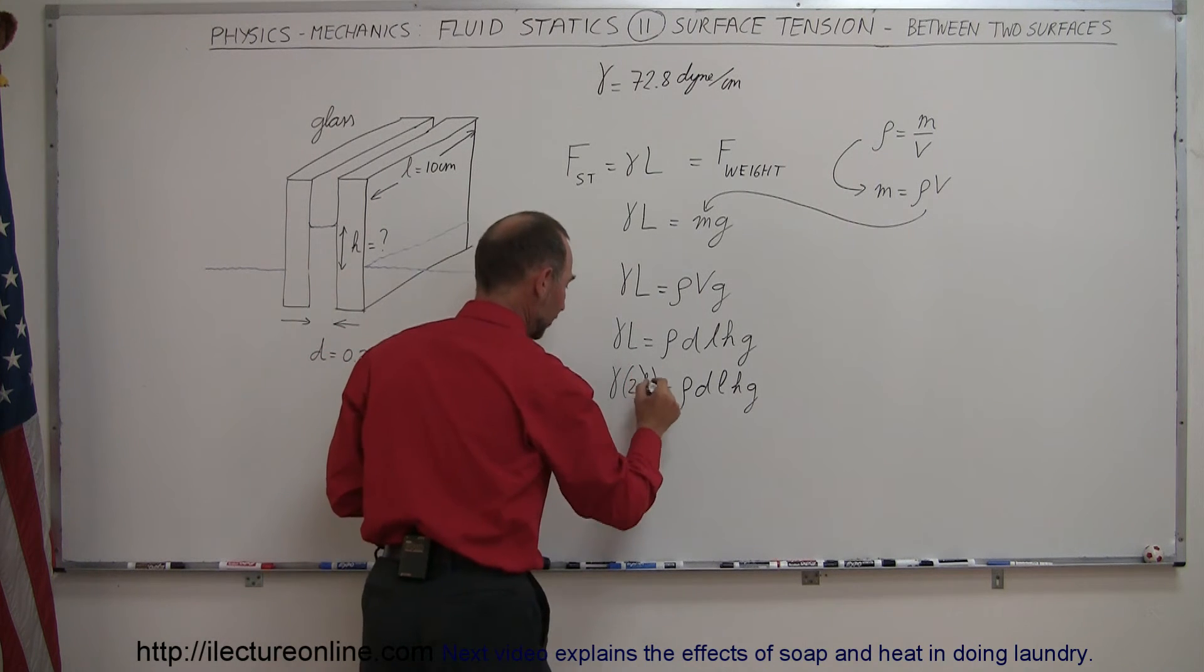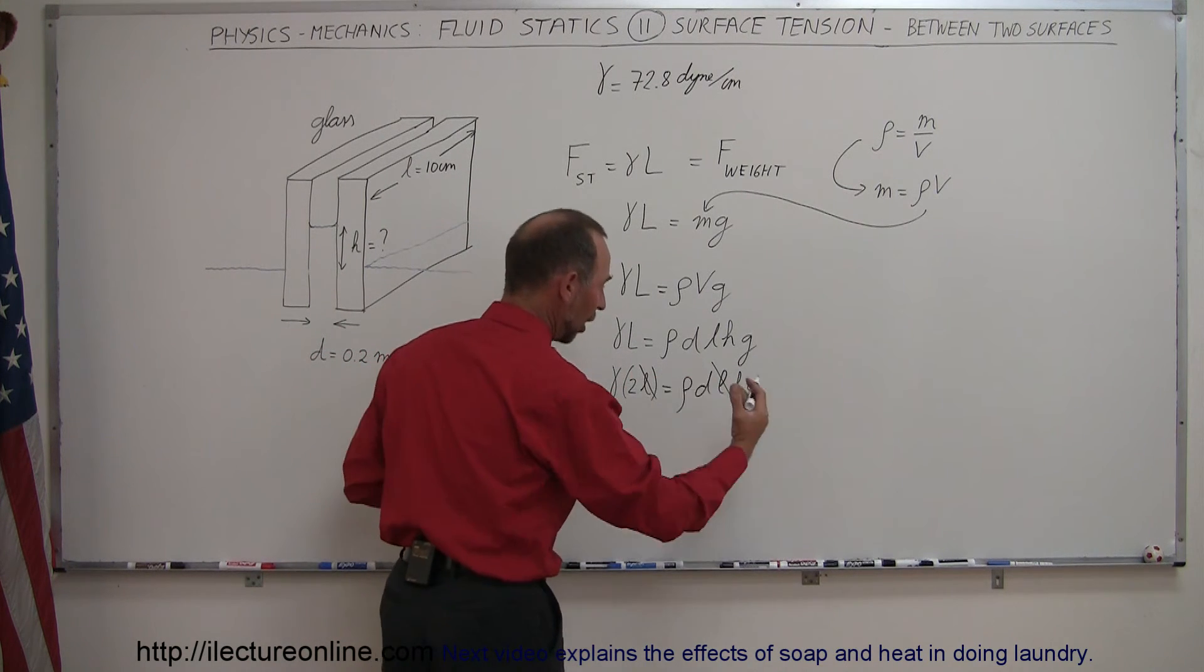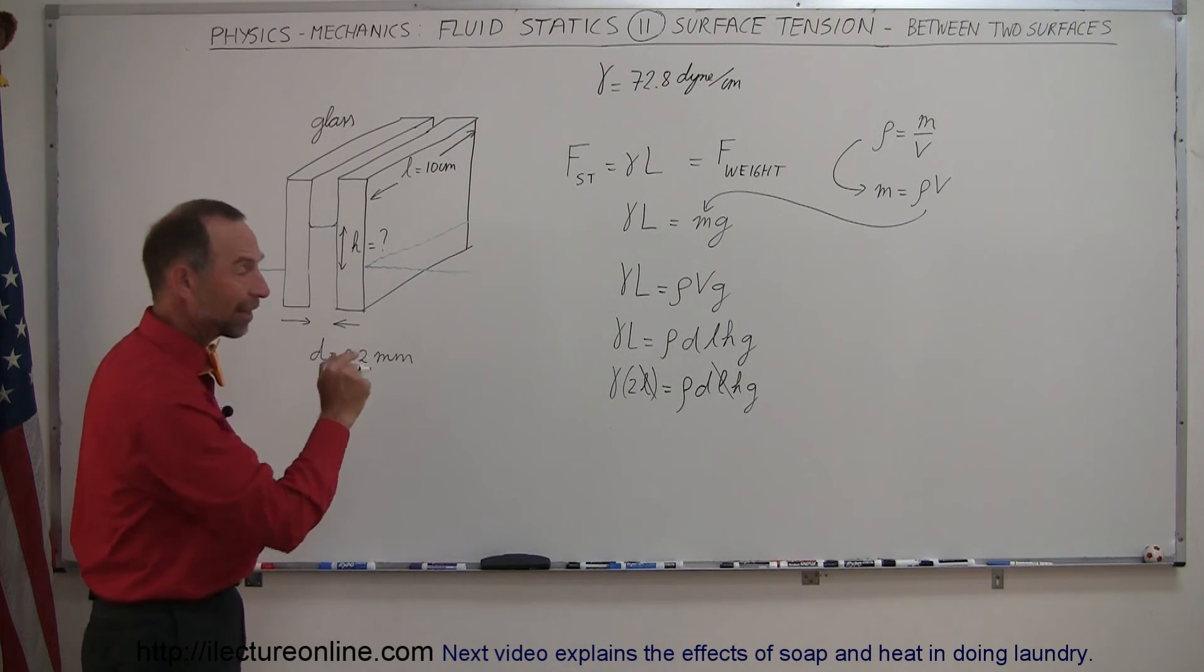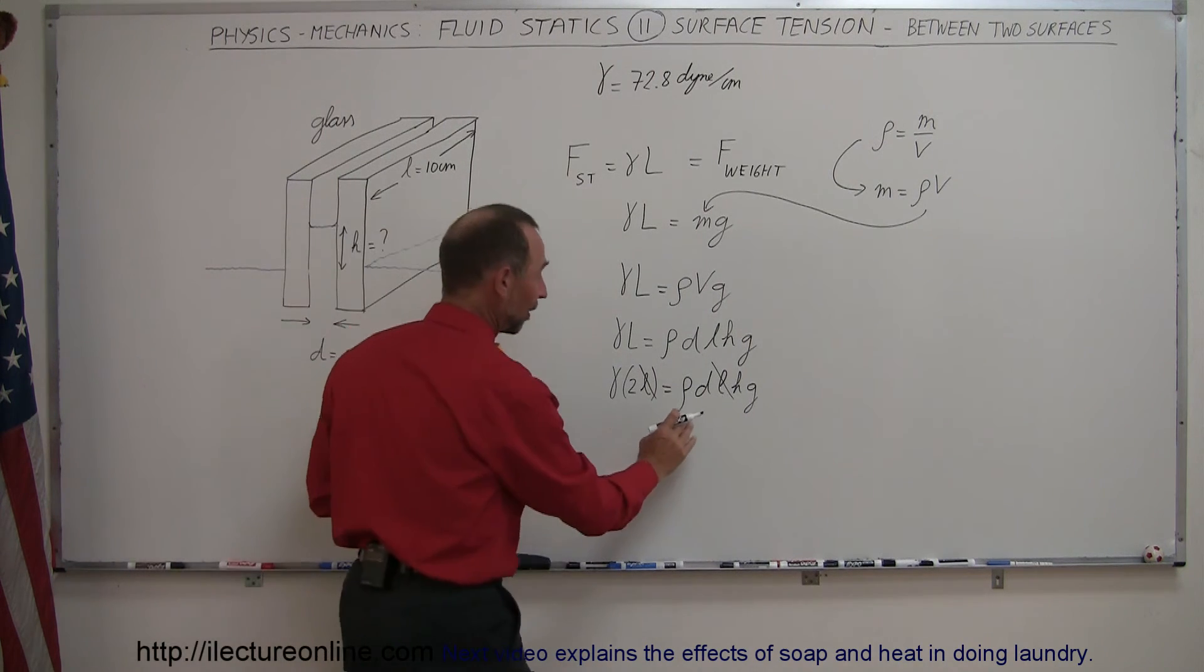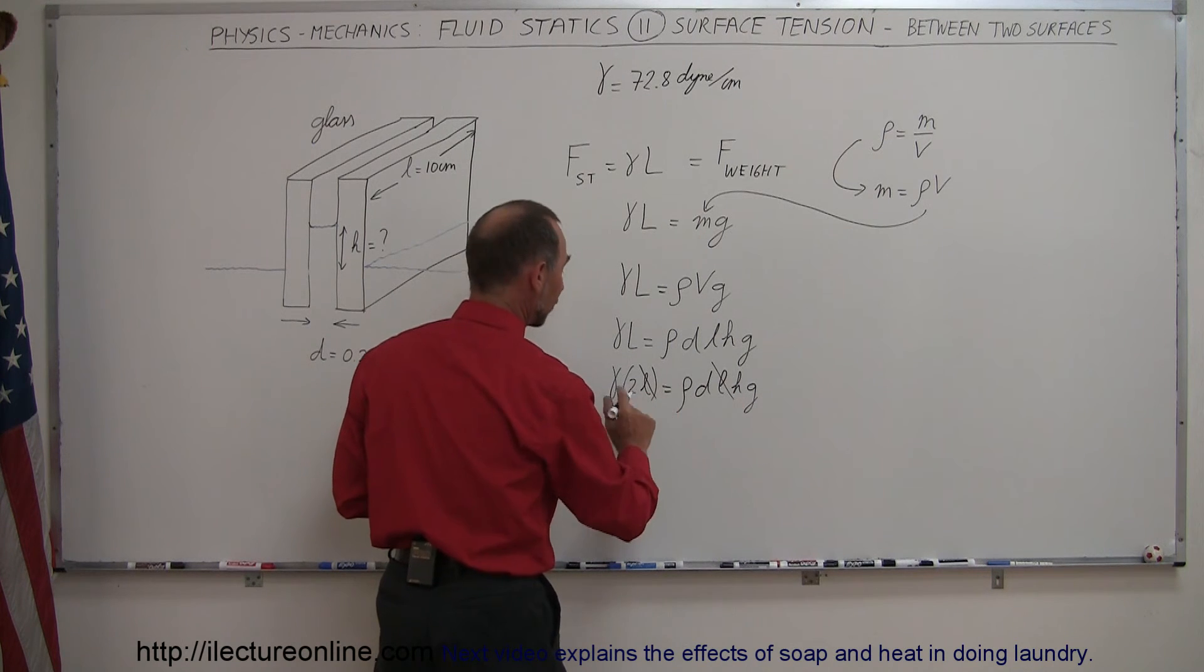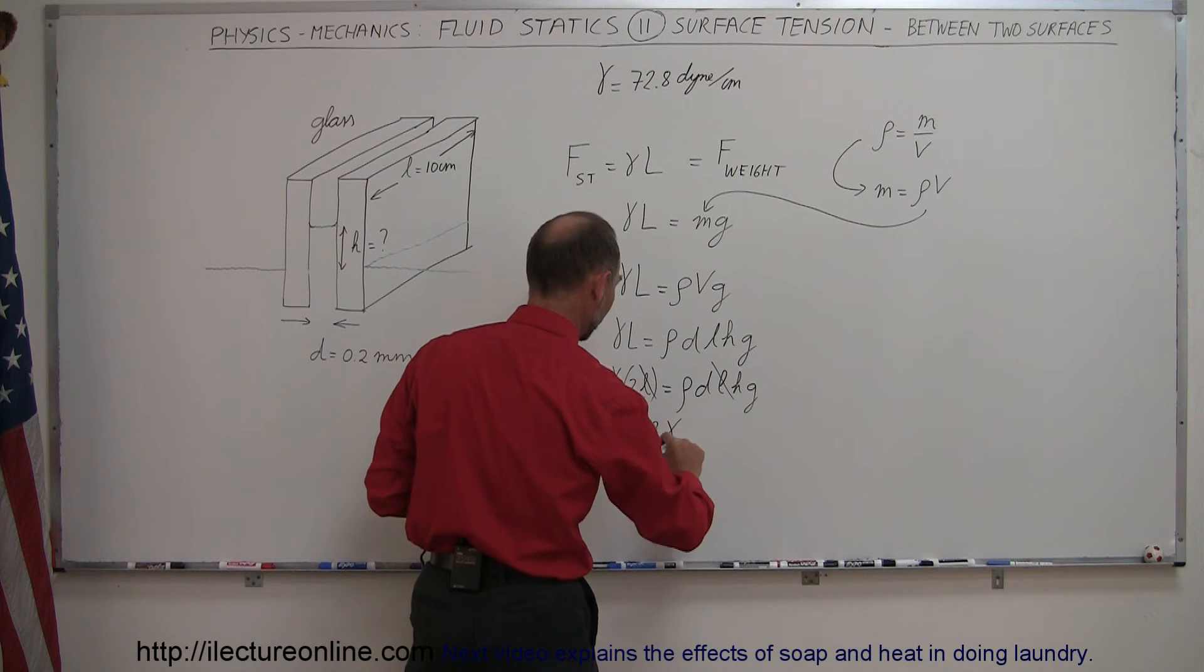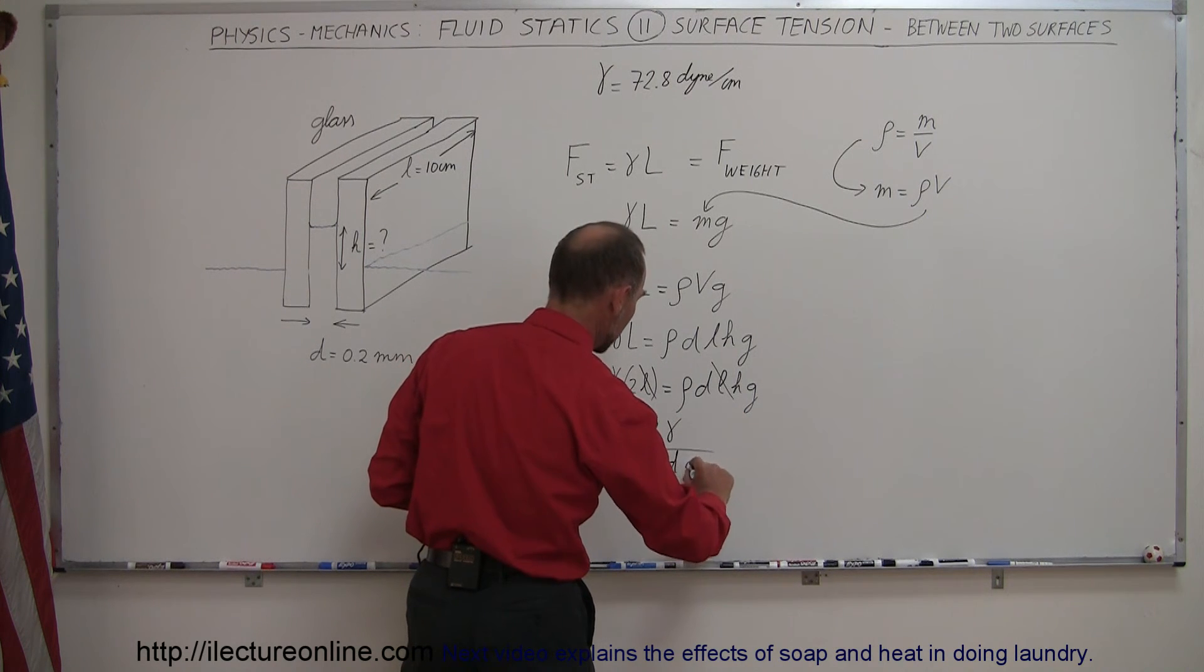Notice we have an l on both sides, so that cancels out—it doesn't matter how long the slabs are, the height will be independent. If we solve for h by dividing both sides by ρdg, we have h equals 2γ divided by ρdg.